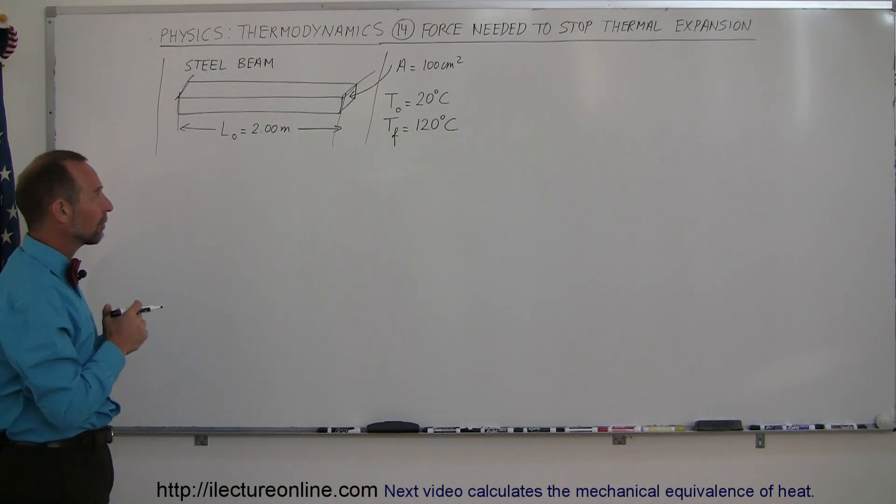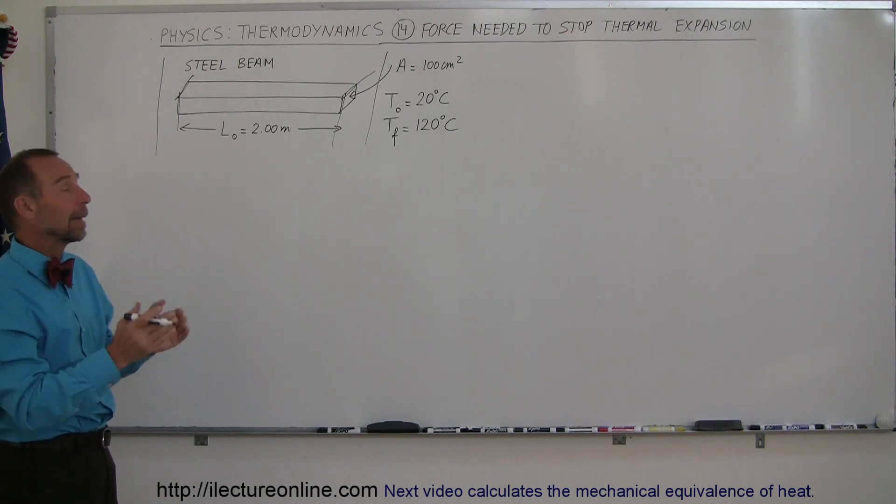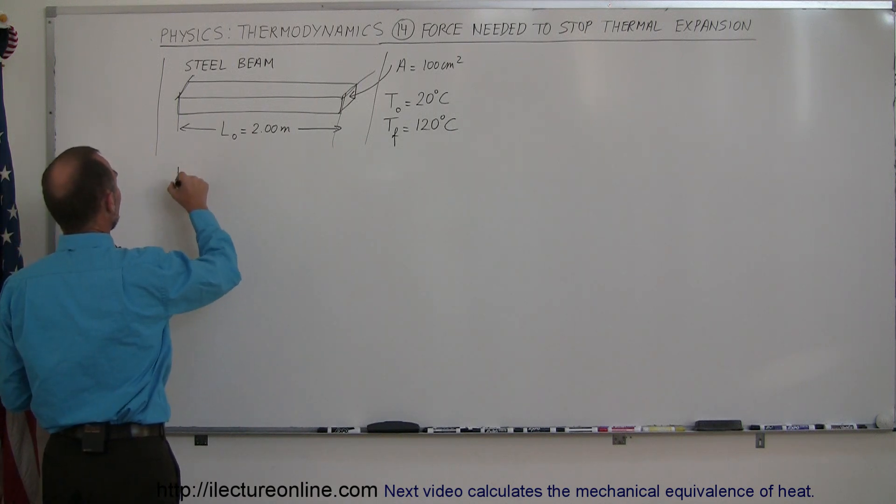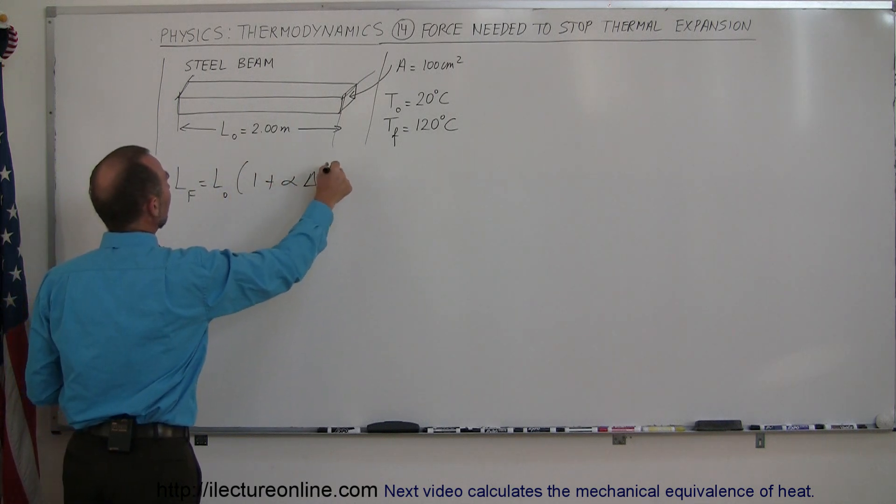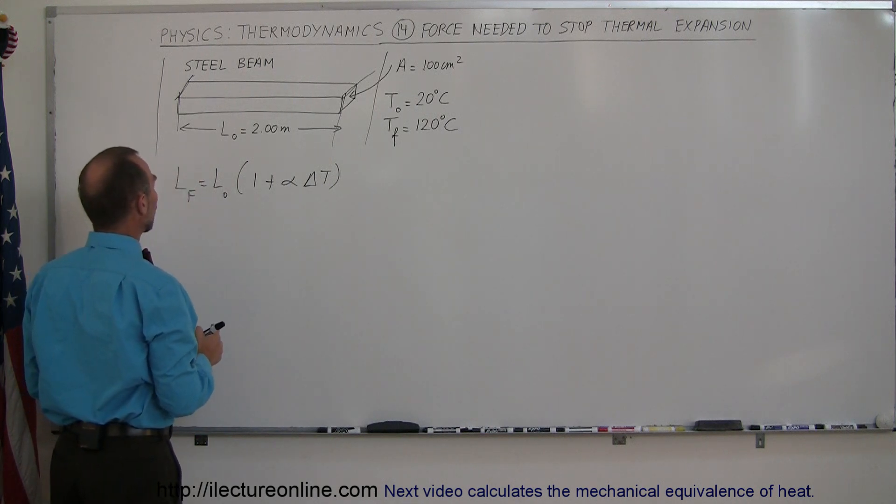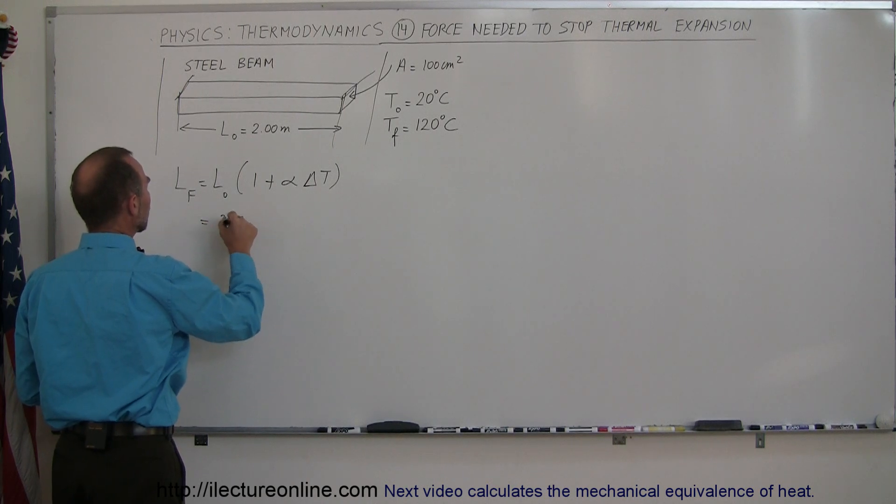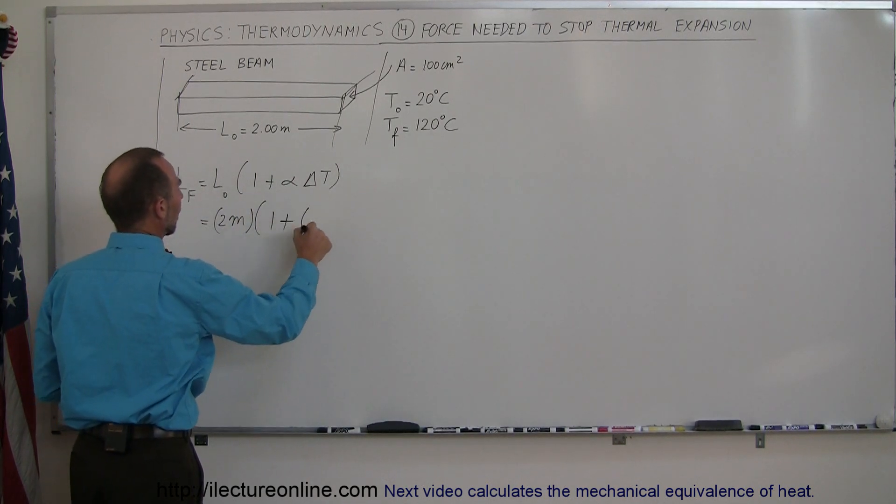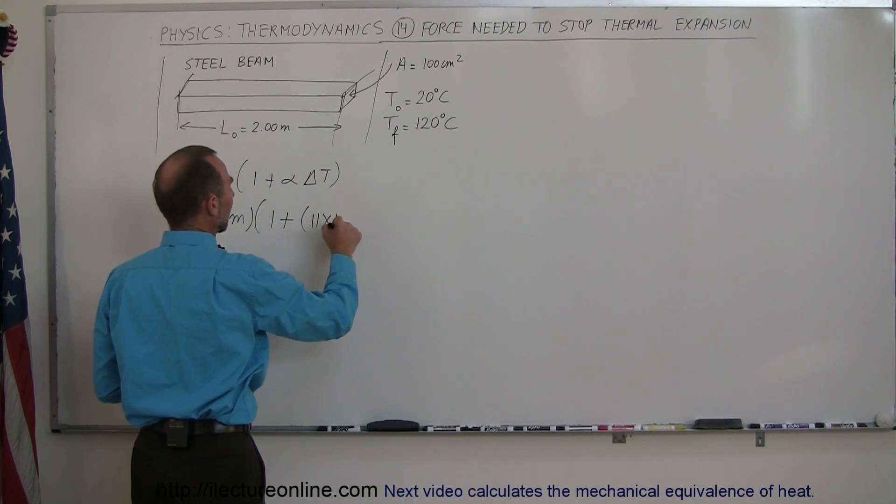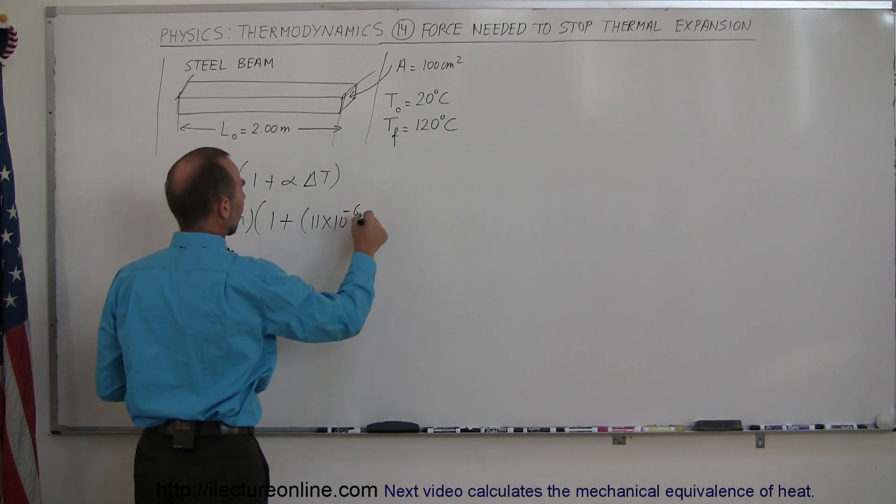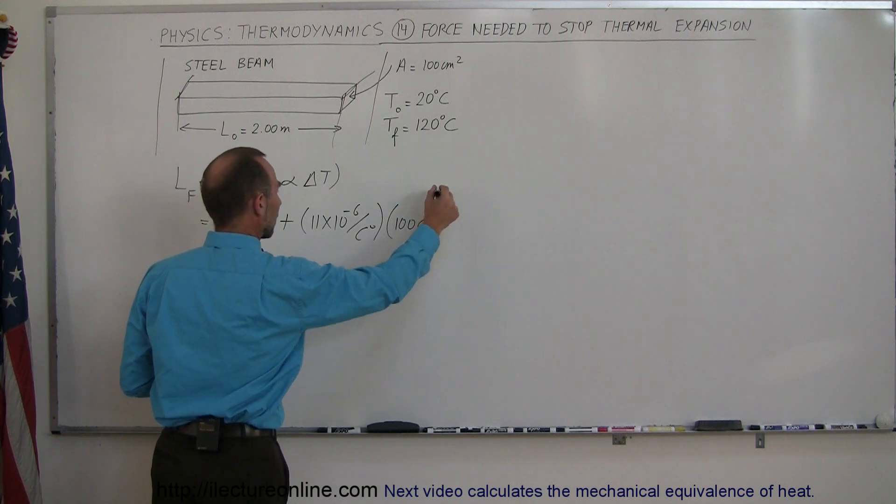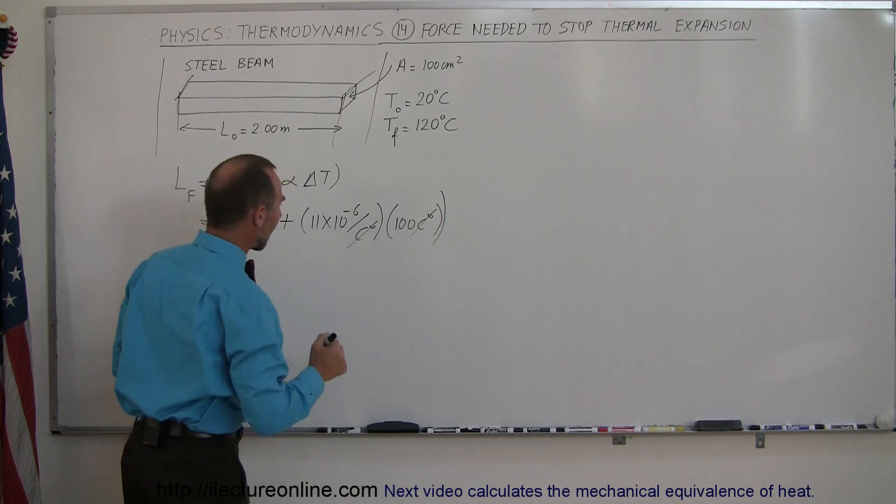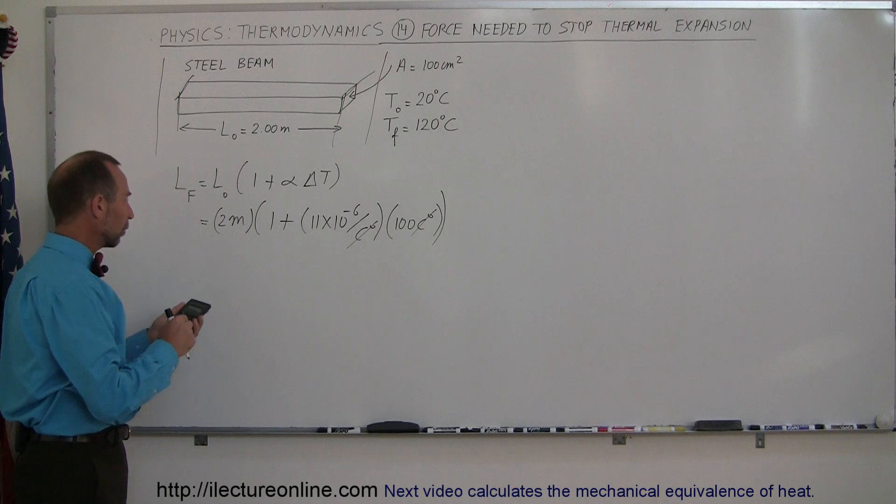First, we're going to figure out how much longer the beam would be if it wasn't hemmed in. L final equals L initial times one plus alpha delta T. To find the change in length, we have an initial length of 2 meters, multiply that times one plus the alpha here for steel, which was 11 times 10 to the minus 6 per centigrade degree, and the change in temperature would be 100 centigrade degrees.